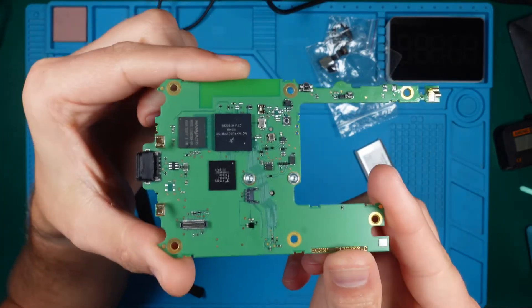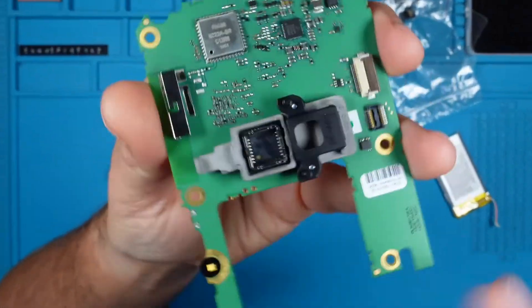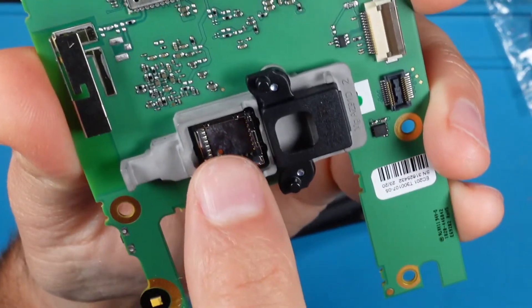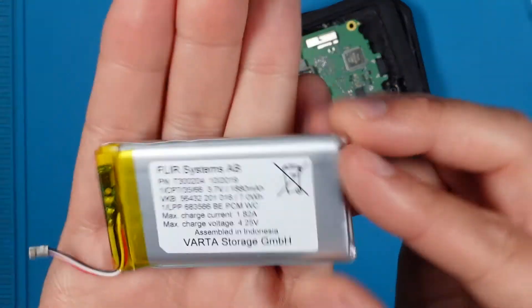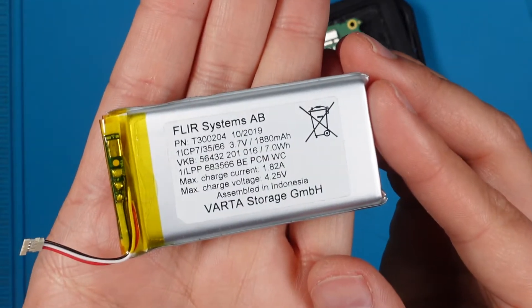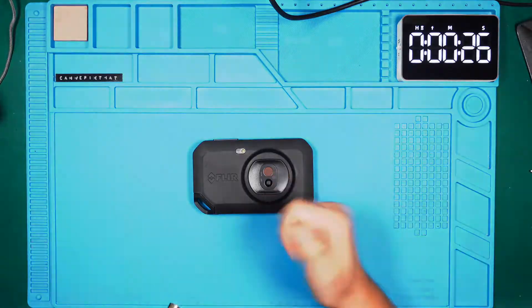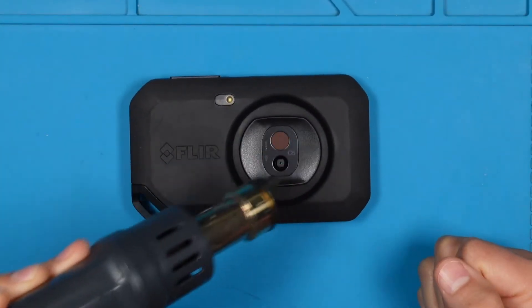Here's the FLIR C5 motherboard with a socket for the thermal module in view. Unfortunately, I can't show you the thermal camera module itself, as I've sold it. The battery isn't externally accessible either. You have to pop open the shell first to get to it. What a shame. Now let's refocus on our device at hand.